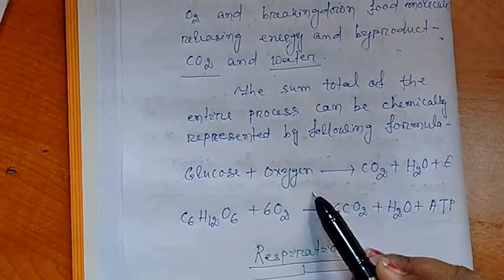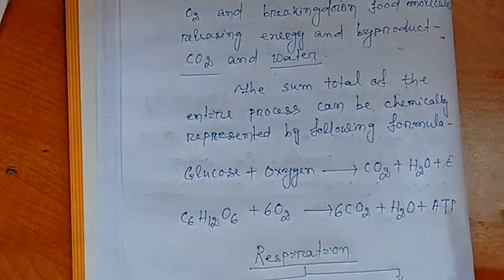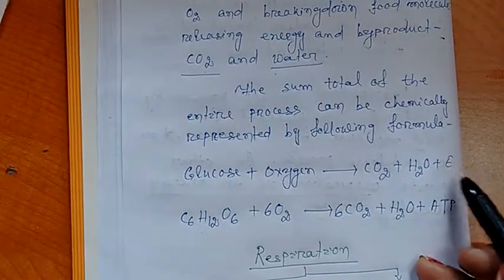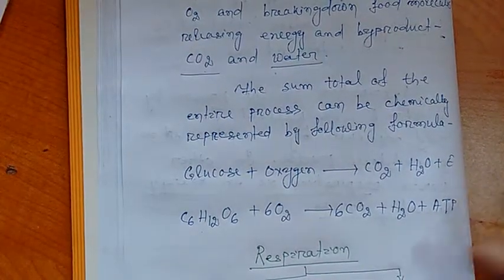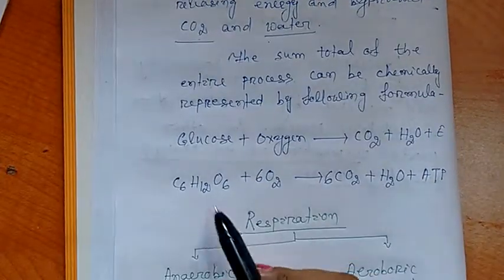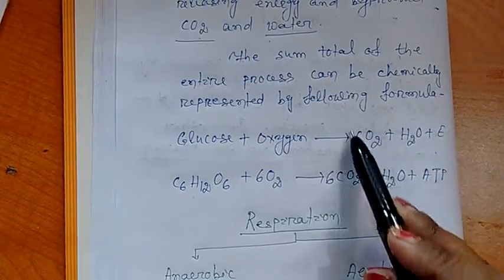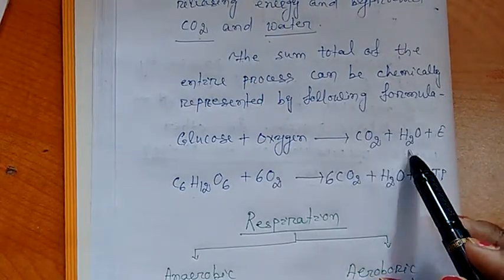Glucose plus oxygen gives rise to carbon dioxide, water, plus some amount of energy, which is the major product of respiration to liberate energy. I have already written the chemical names of carbon dioxide and water.